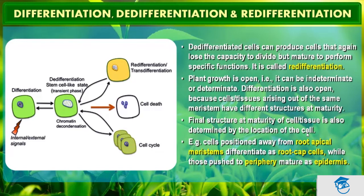Consider: list some tissues in a woody dicotyledonous plant that are products of re-differentiation. How would you describe a tumor? What would you call the parenchyma cells that are made to divide under controlled laboratory conditions during plant tissue culture? Plant growth — or growth in plants — is open, meaning it can be indeterminate or determinate.